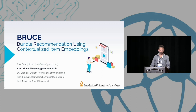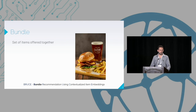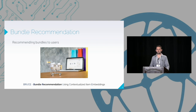Let's start with an introduction by breaking down the paper's name. First, let's understand what a bundle is. A bundle is basically a set of items purchased together, like a combo meal — for example, a Coke, fries, and a burger.